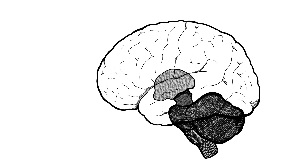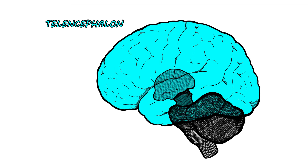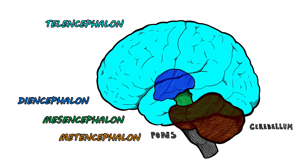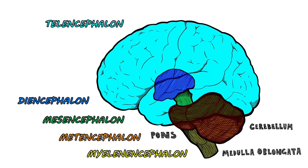The brain has five divisions that aid in localization, and there are important structures at each and every station. The telencephalon, diencephalon, midbrain or mesencephalon, pons and cerebellum in the metencephalon, medulla in the myelencephalon.